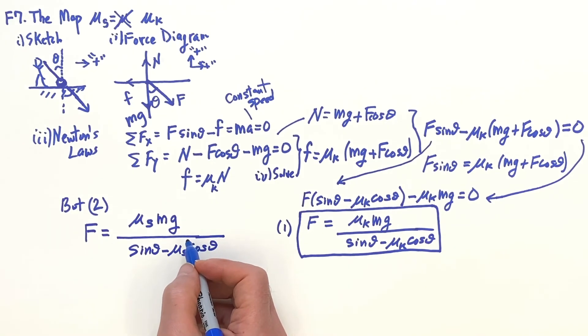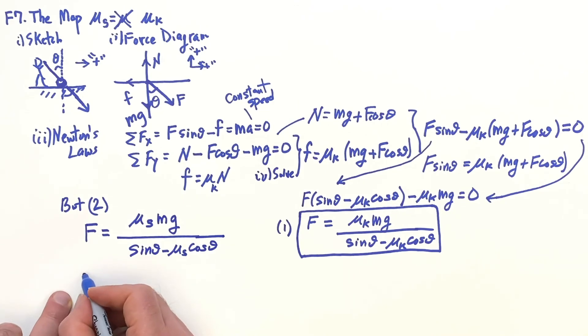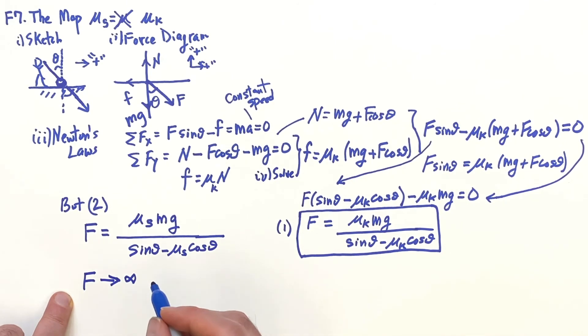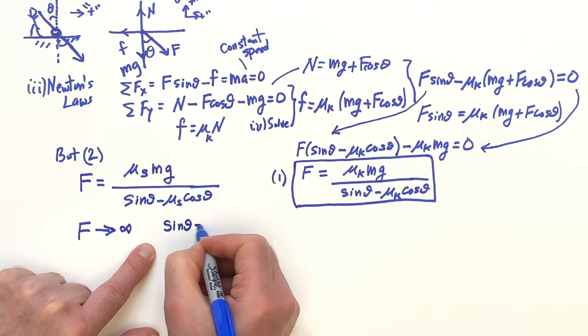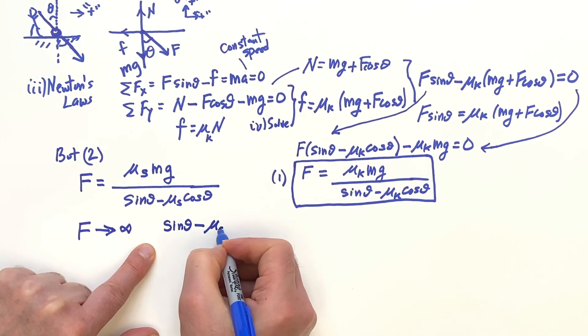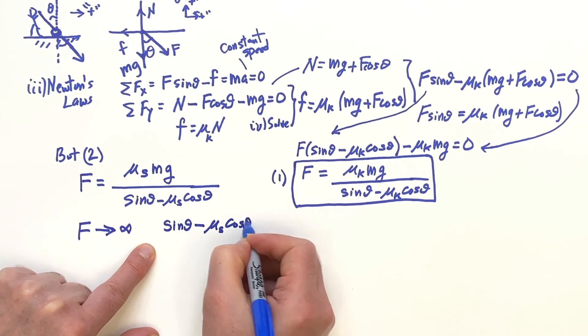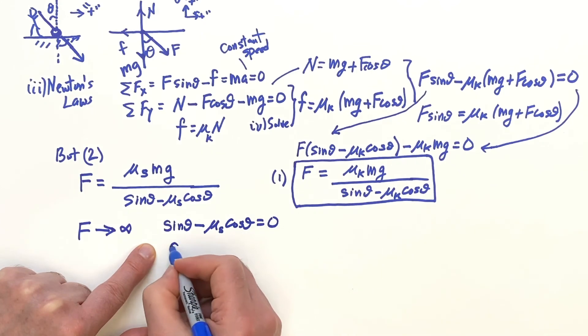So we're not going to move, but we want to know what happens. We want the force to need an infinite force - like you can't do it. If the force goes to infinity, that's going to happen when the denominator goes to zero. So we want the condition: sin θ minus μ_s cos θ equal to zero.